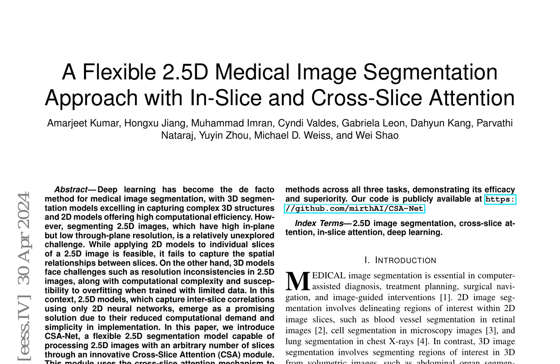CSA-NET, a novel 2.5D segmentation model, addresses the challenge by incorporating a cross-slice attention module. This module employs the cross-attention mechanism to capture the correlation between regions in the center slice and regions in its neighboring slices.